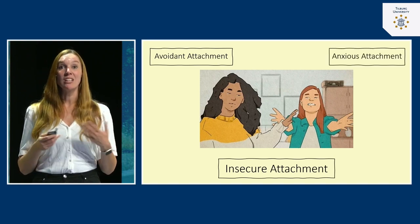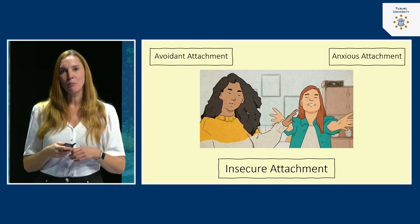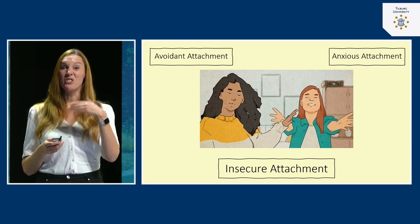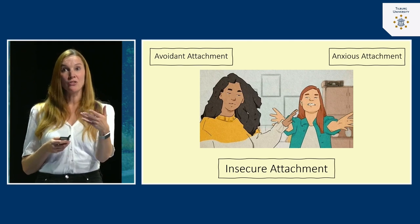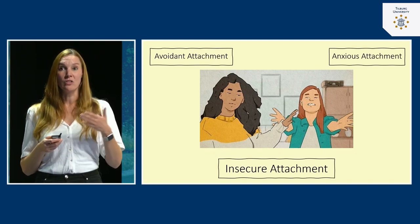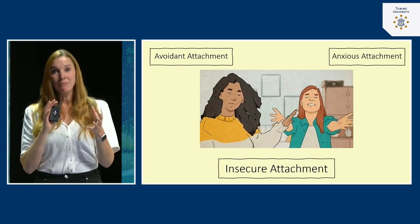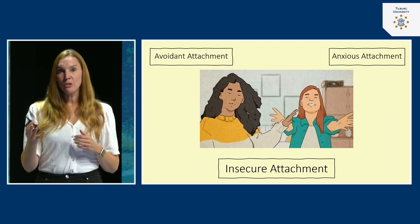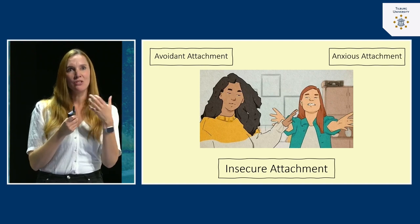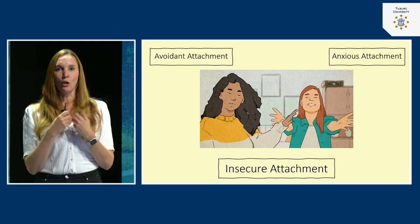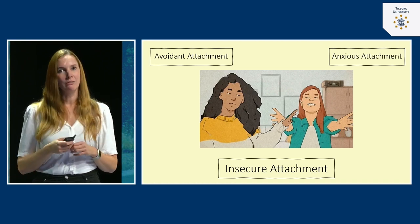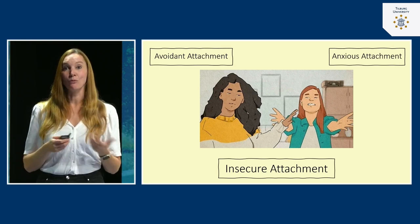Then there is the opposite insecure attachment style: the anxious attachment style, which approximately 9% of people have. If you have an anxious attachment style, you have a very high need to form relationships — you desperately want to be in a relationship, but feel unworthy, feeling like others might leave you. Especially if an anxious and an avoidant person form a relationship together, this can be highly problematic: one person clings on while the other feels trapped or suffocated. These two styles don't go well together, yet you still often see them form relationships.